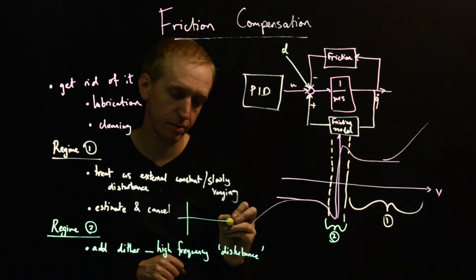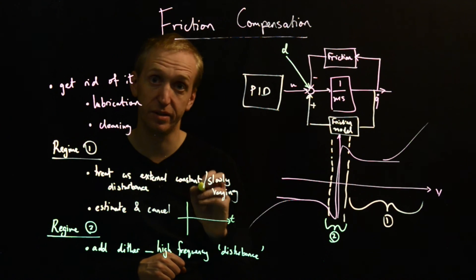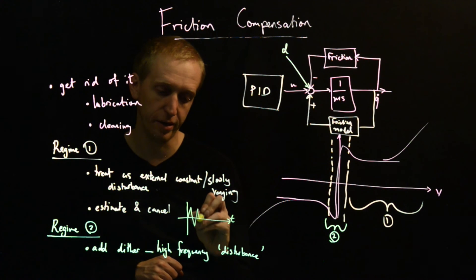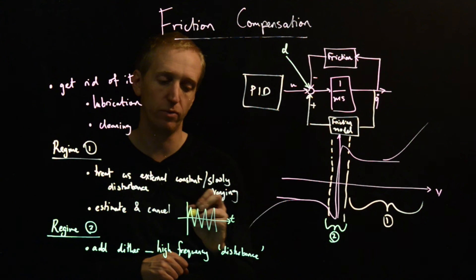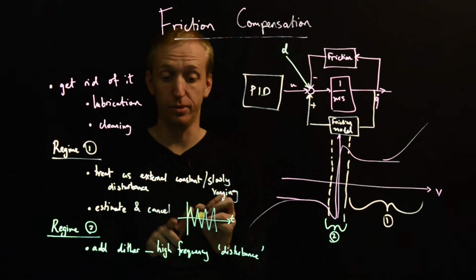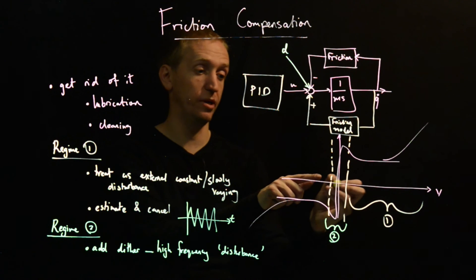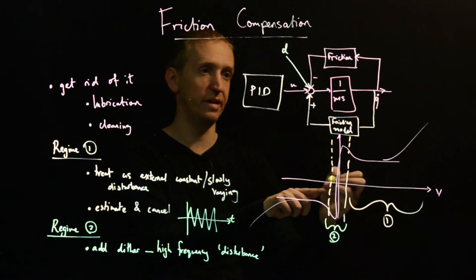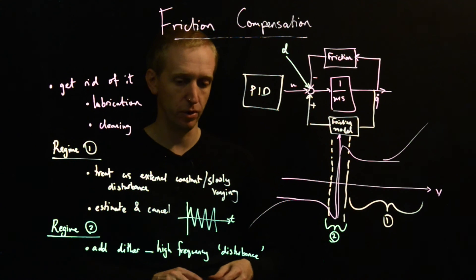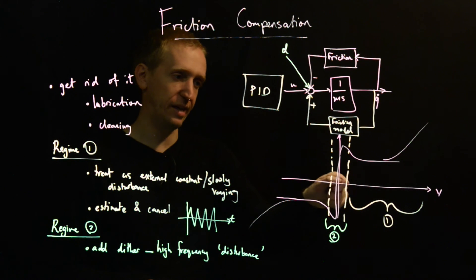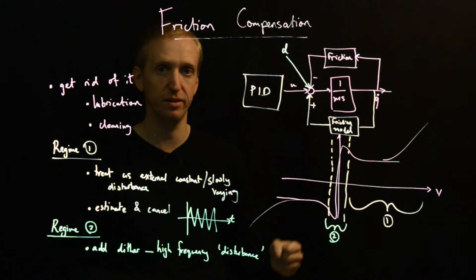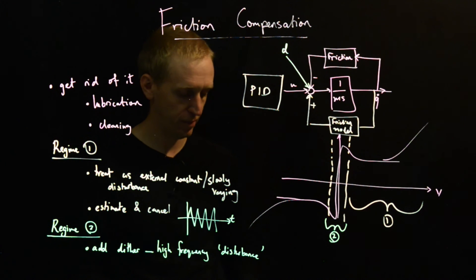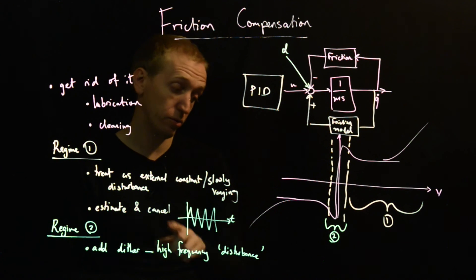What's some common choices for a dither signal? Maybe the simplest thing that you could apply for your dither signal is just some kind of triangle wave or square wave. High frequency and the amplitude should be big enough to try and just knock your system so that it never settles down to having zero velocity. You're sort of just shaking yourself around here to prevent this stiction effect.